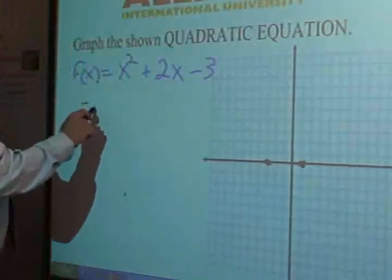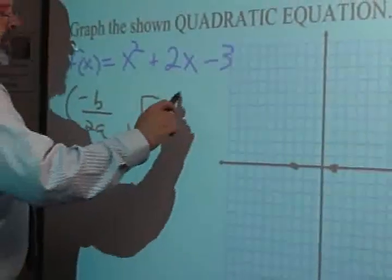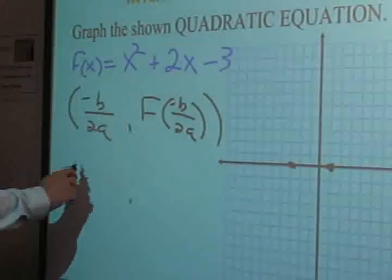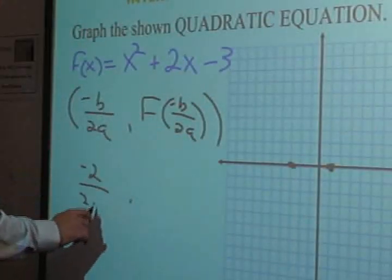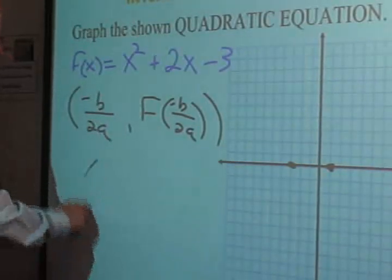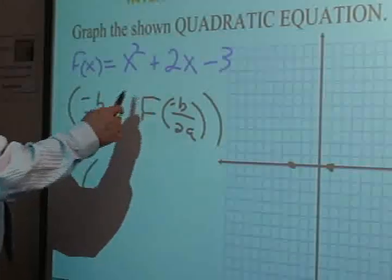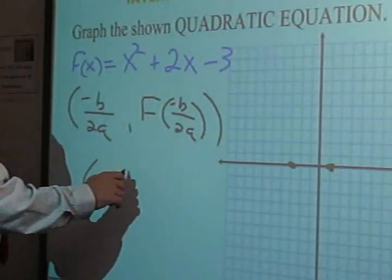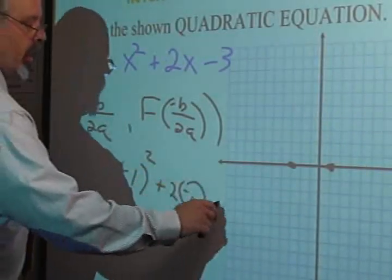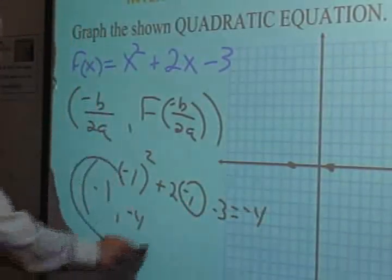Now you find the vertex and the function of that number. Negative b over 2a is negative 2 over 2 times 1. So that's negative 2 divided by 2. It looks like negative 1 to me. And then the function of negative 1 is, let's just write it out. Negative 1 squared plus 2 times negative 1 minus 3. That looks like negative 4 to me. There's your vertex.